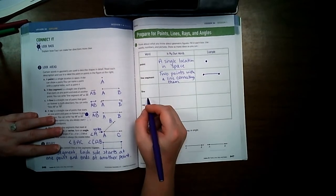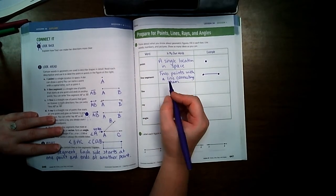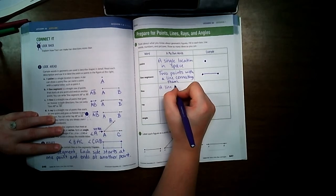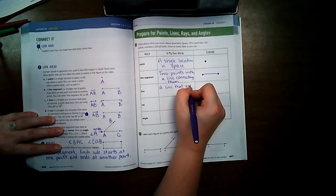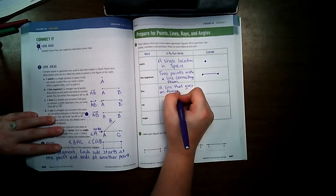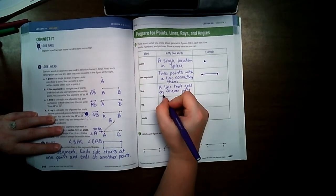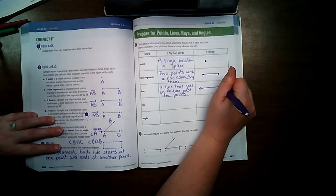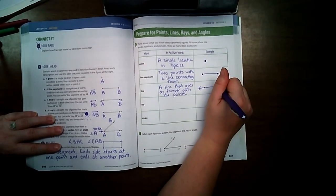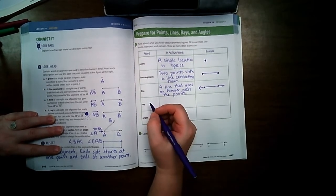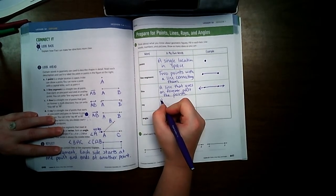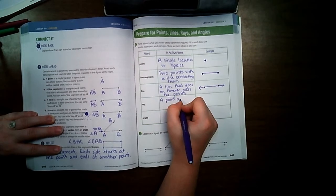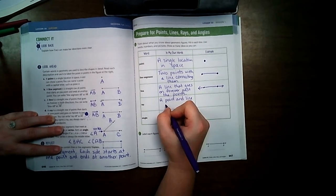A line segment is two points with a line connecting them, and it looks like this. A line is a line that goes on forever past the points.